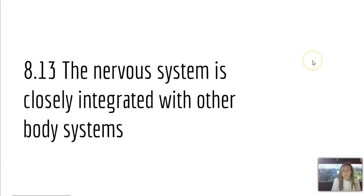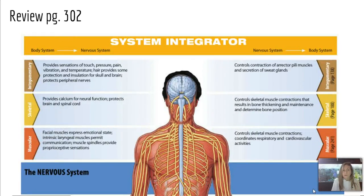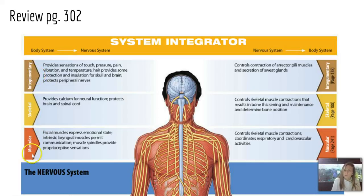Finally, section 8.13 reminds you to look closely at how the nervous system is integrated with other body systems. On page 302, there's a system integrator picture that we look at for every section. I would suggest looking at how the nervous system interacts with the integumentary, the skeletal, and the muscular systems, and just jot down a few notes about that. And we are done — I'll see you guys next time.